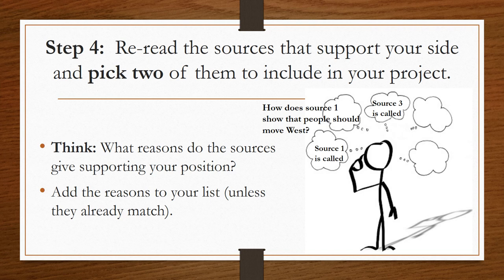Step four is to reread the sources from the packet that support your side and pick two of them to include in your project. For example, if I held the position that I want to go west, I would go through the eight sources and identify which ones have a W next to them. Those are the sources I should choose for my project to prove that others should move west too.